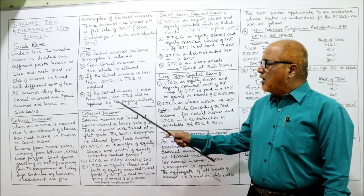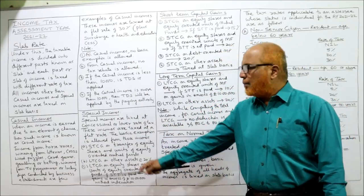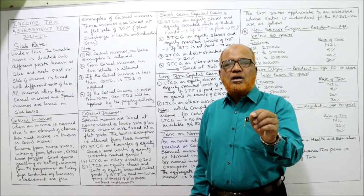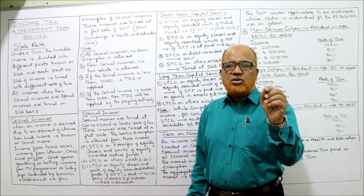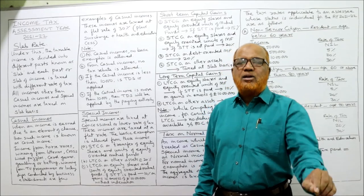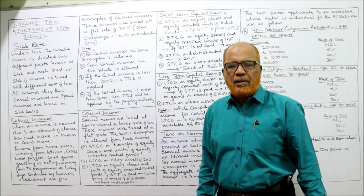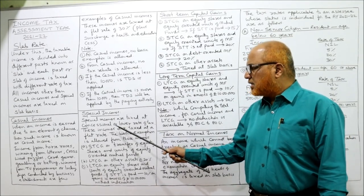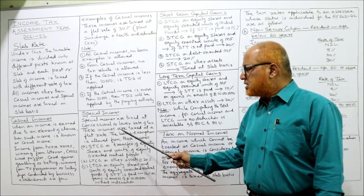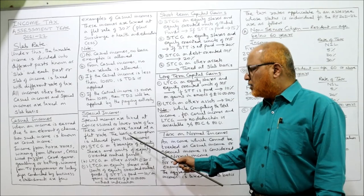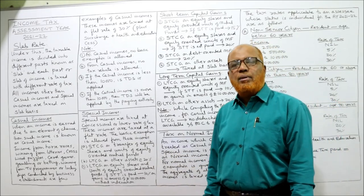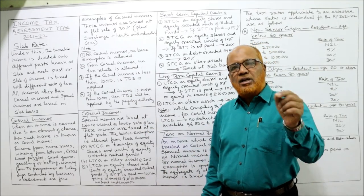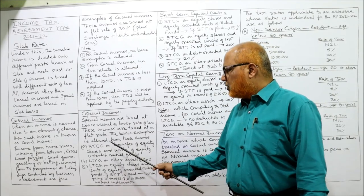Now special incomes: special incomes are those incomes on which a flat rate or concessional or lower rate of tax is applied. These incomes are taxed at a flat rate. Importantly, the basic exemption is allowed from special incomes — remember, basic exemption is not allowed from casual incomes, but basic exemption is allowed from special incomes.